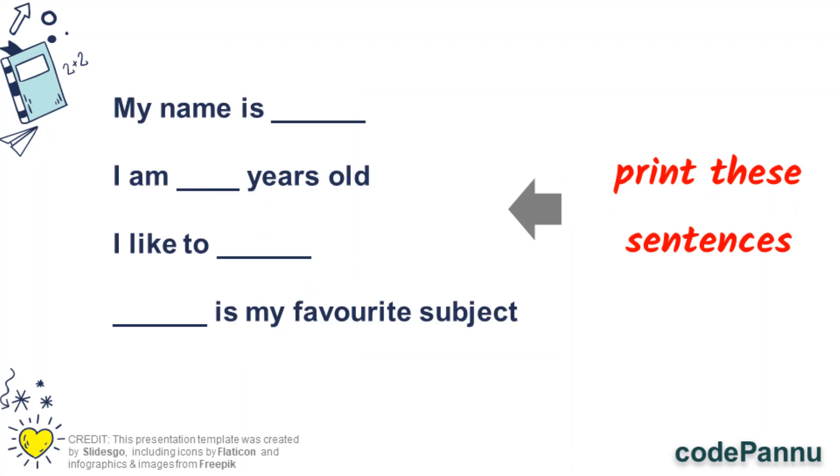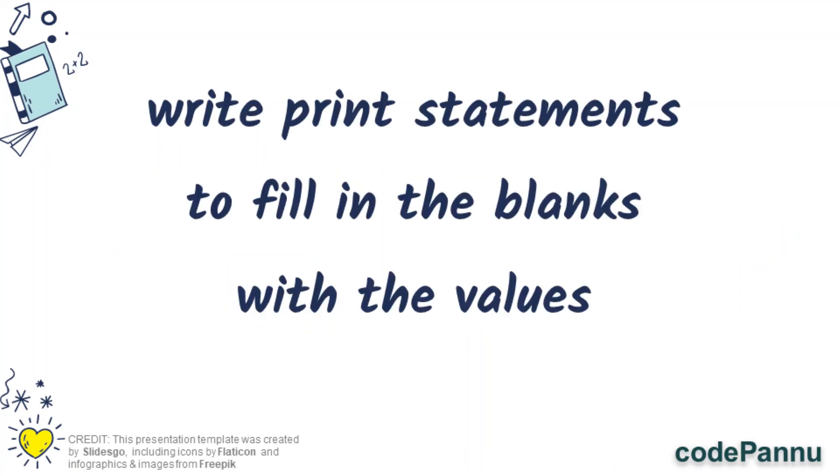And then you are going to print the following statements: 'My name is ______', 'I am ______ years old', 'I like to' whatever you like to, your hobbies, I like to listen to music, play basketball, collect coins, whatever you want to write, and 'blank is my favorite subject' so you can write anything, math, English, science, social, history, anything. So the value of your variables should be printed in the places that I have given blank.